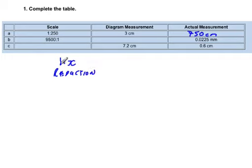So this would be like a map, where it's 1 to 2500 or 1 to 250. And the other is x to 1, where this is an enlargement, and here x is greater than 1.